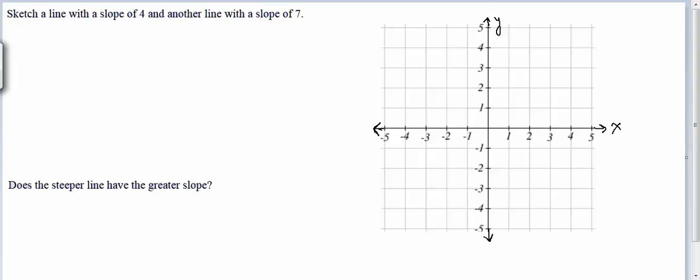It's interesting, the only thing they give us when they ask us to sketch the line is the slope. So first thing to think about is that there's not just one right answer here. There's an infinite number of lines with slope 4. We can pick any starting point we like on the graph, and from that point we could draw a line with slope 4.